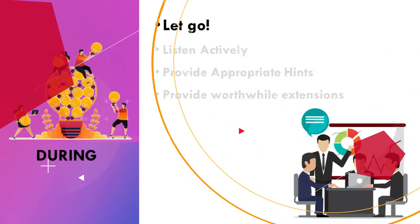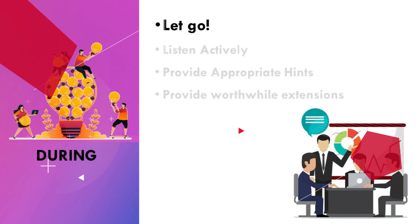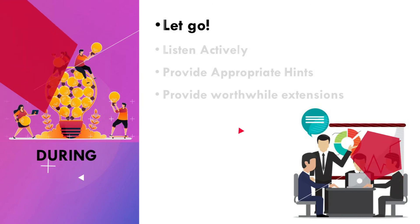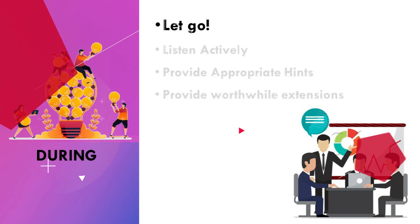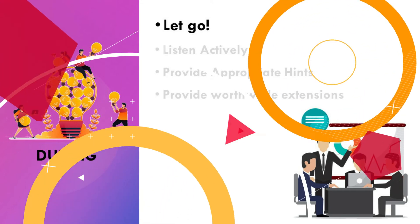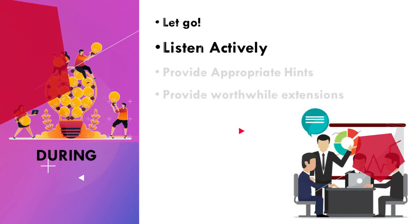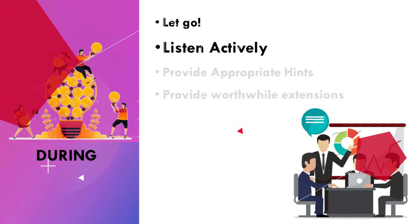Let go is the first thing to be considered by teachers in the during phase. Doing mathematics takes time and solutions are not always obvious. It is important to communicate to learners that spending time on tasks, trying different approaches, and consulting each other are important to learning and understanding mathematics. Second is to listen actively — you are trying to understand a learner's approach to a problem. Your questions as a teacher must probe your learner's approach to a problem.